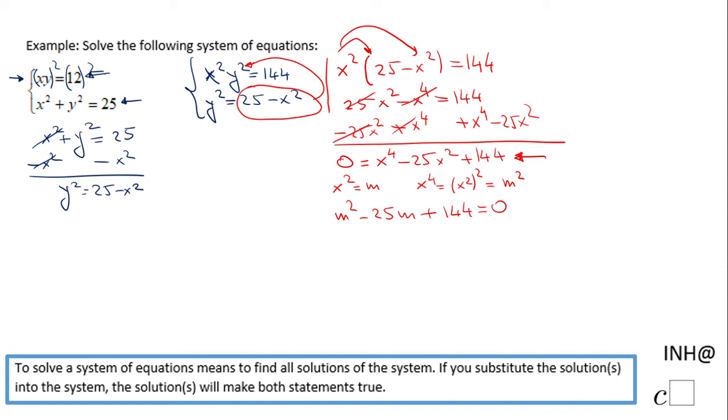We can use factoring. I'm looking for two numbers whose product is 144 and whose sum is negative 25. Those are going to be negative 16 and negative 9.